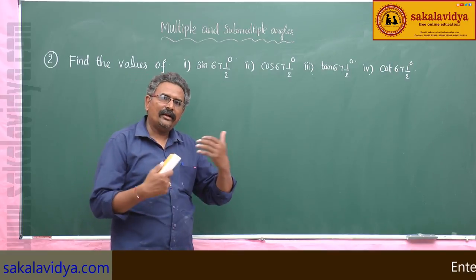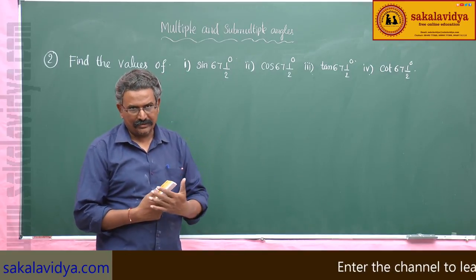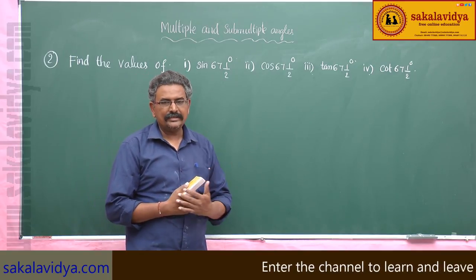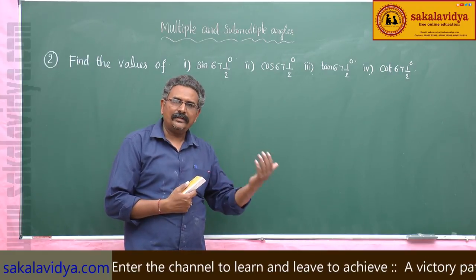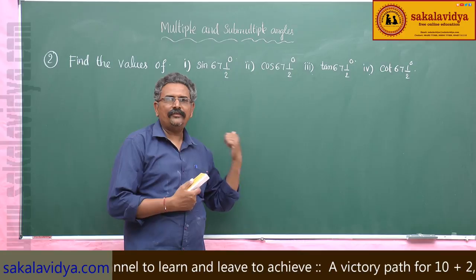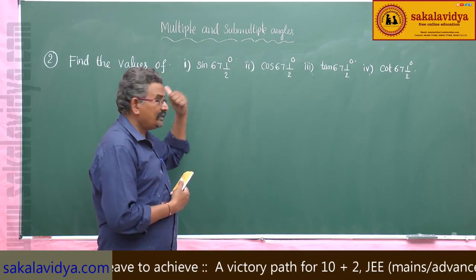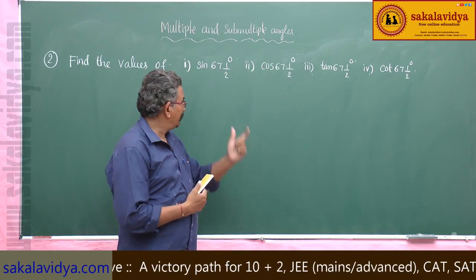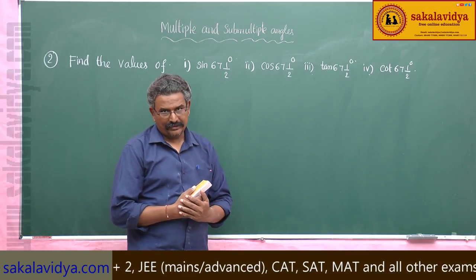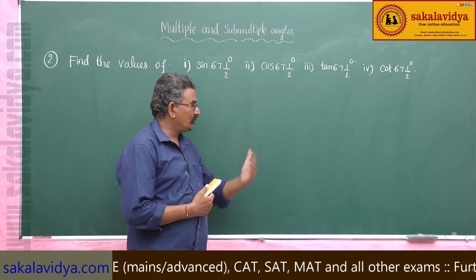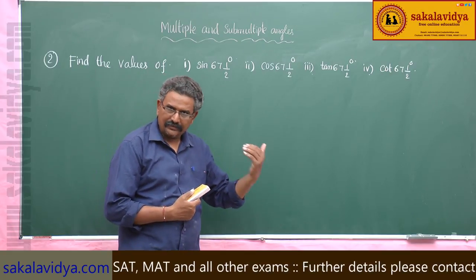As already discussed, we have all the values of sin 22 and a half degrees, cos 22 and a half degrees, tan 22 and a half degrees, and cot 22 and a half degrees. So directly we can find out the values of sin 67 and a half degrees, cos 67 and a half degrees, tan 67 and a half degrees, and cot 67 and a half degrees. Let us proceed in this way.